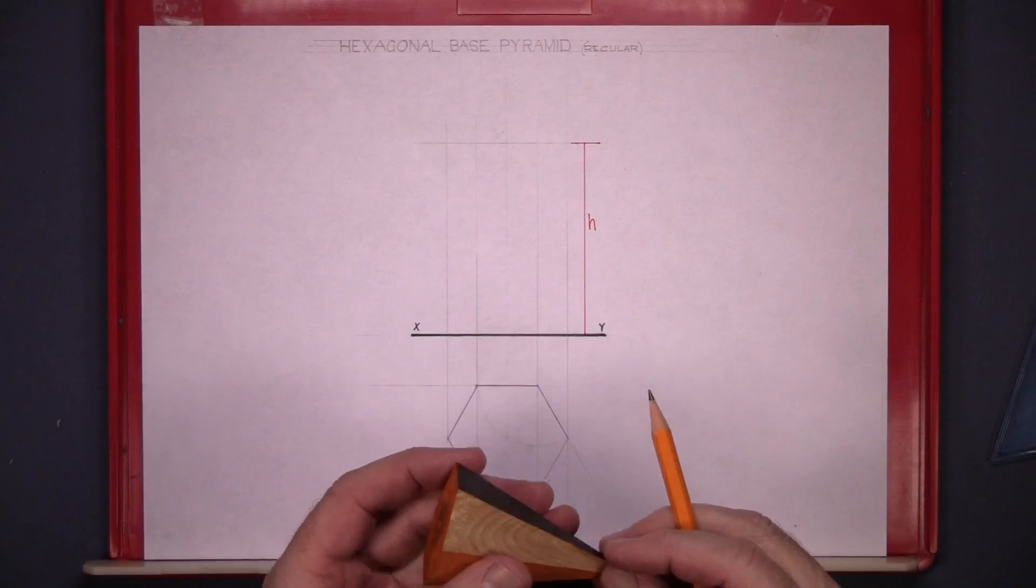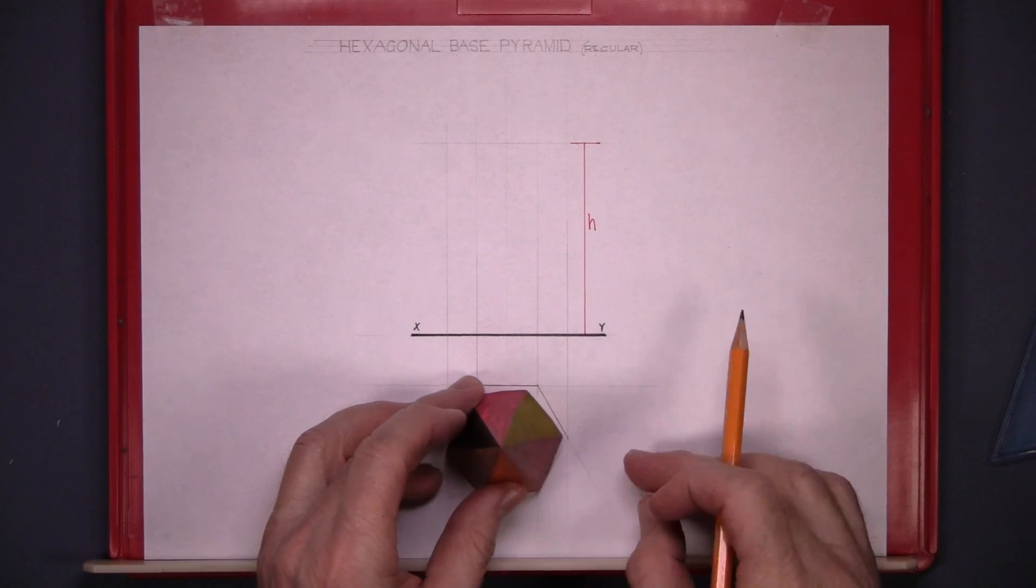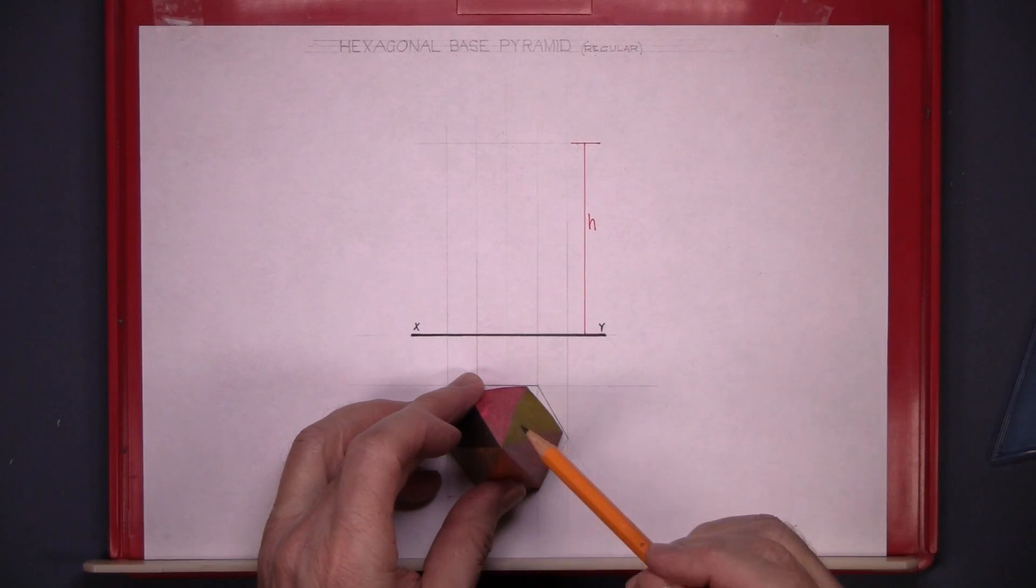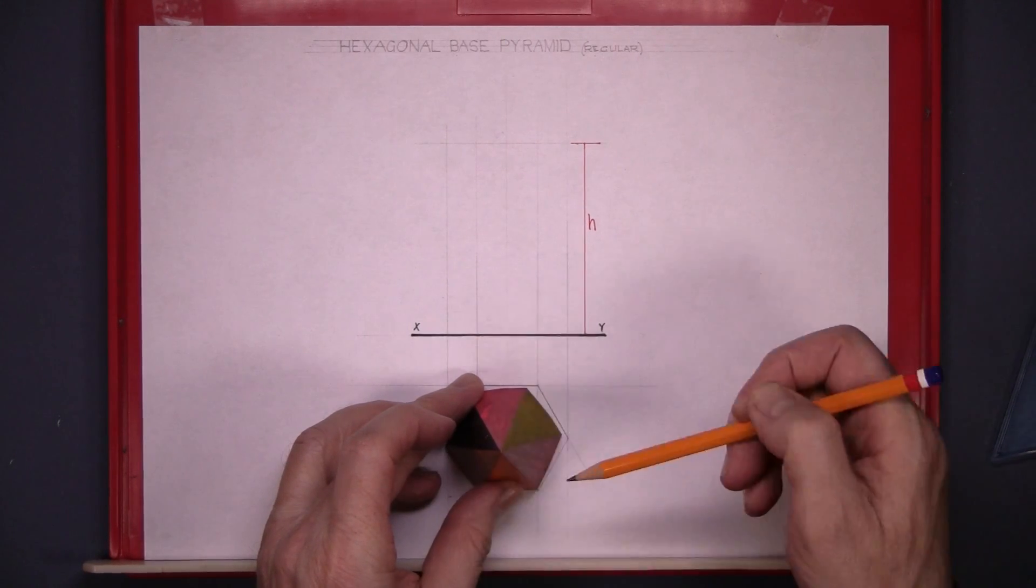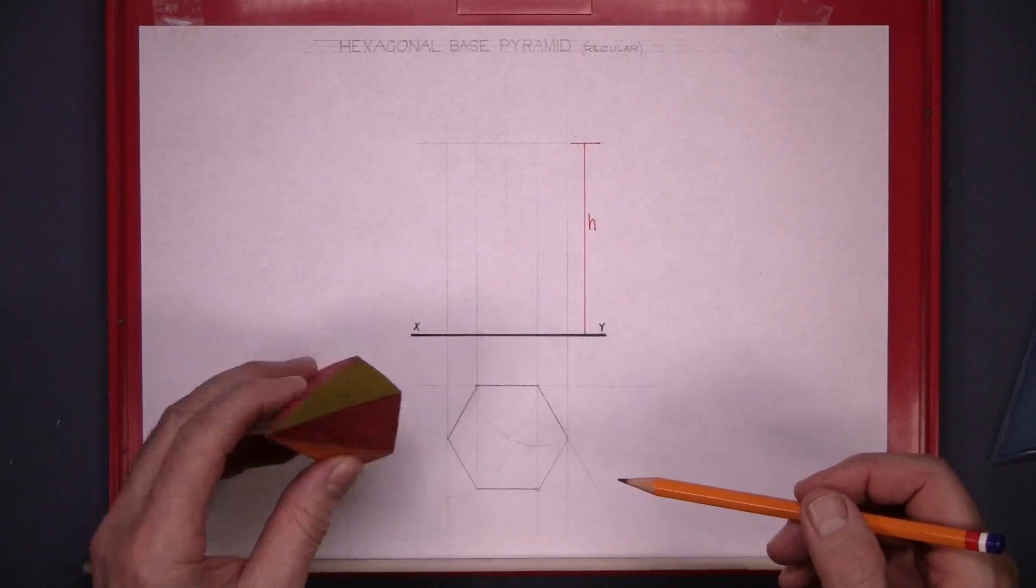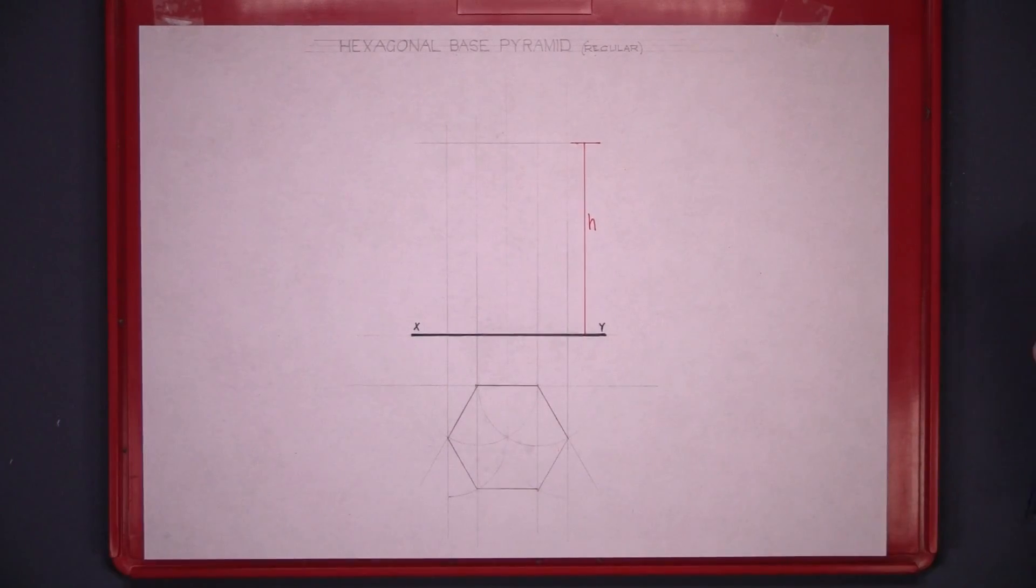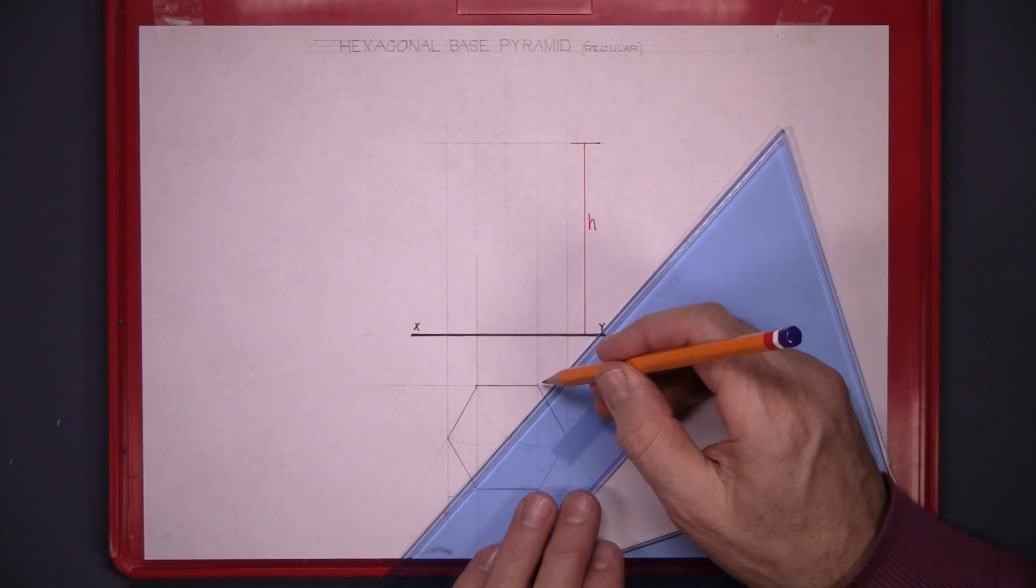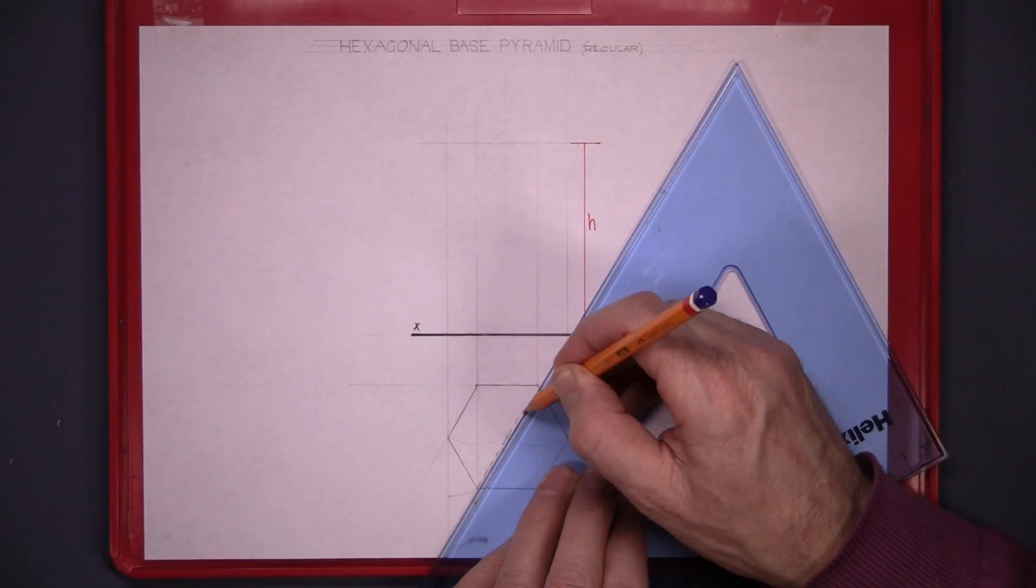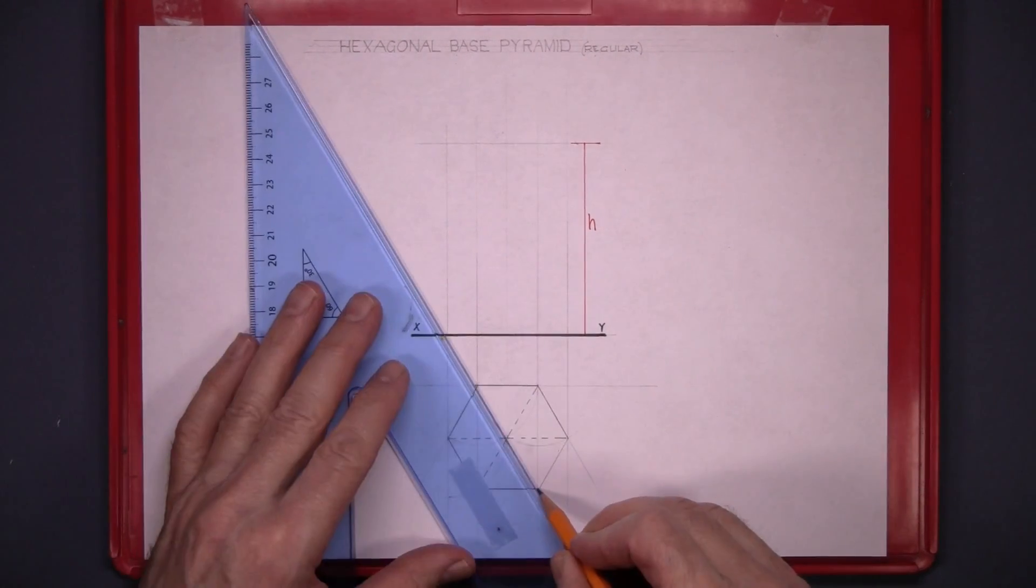Now once we have it drawn, we have to get the lines that show the triangles. So because there's an even number, we can join the diagonals across. So just join the diagonals in the hexagon. So that point to that point, and this time they have to be dotted lines. So we join the dotted lines across. And that's that complete.